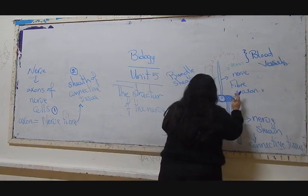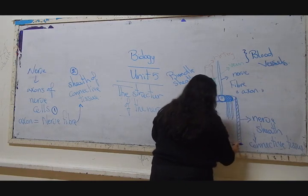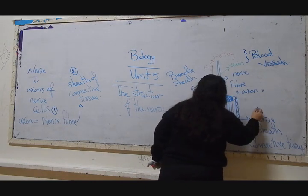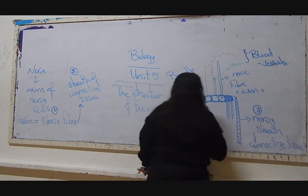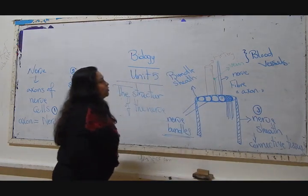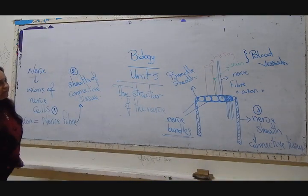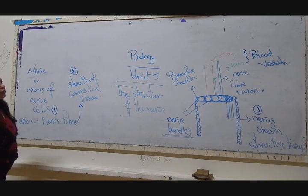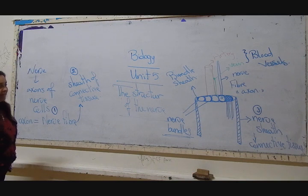These bundles are connected together in one other sheath, which we call nerve sheath. This is number three. For the nerve to have food and oxygen, we should have blood vessels, like an artery and a vein.